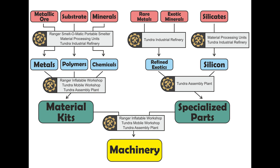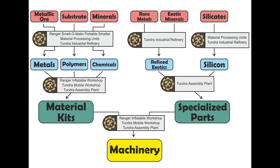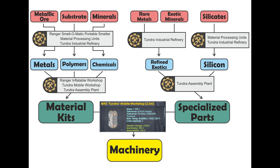Material kits are very useful because they allow you to build new base pieces on the surface of your destination body, relatively close to your colony, provided you deliver a DIY kit with the Ground Construction mod that comes with MKS. Refined exotics and silicon can be combined into specialized parts in the Tundra Assembly Plant. And once you have both material kits and specialized parts, you can finally produce machinery in either the Ranger Inflatable Workshop, Tundra Mobile Workshop, or Tundra Assembly Plant.